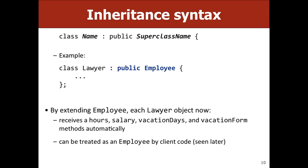What that usually looks like in code is: class, whatever your name is — like lawyer — and then this colon, which you can kind of read as the Java keyword 'extends'. They didn't want to make it an actual word for historical reasons, so they used a colon. It just means extends — public — and then the superclass name. So this would look like: class lawyer colon public employee. What this means is every lawyer automatically gets hours, salary, vacation days, and vacation form. You don't need any of that code — it just automatically has it. You don't need to write those methods.